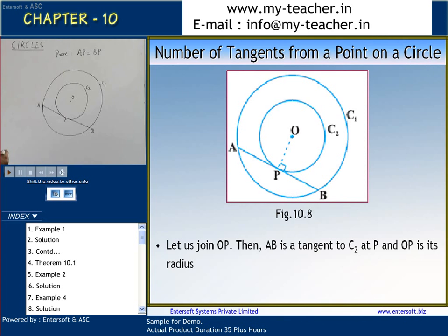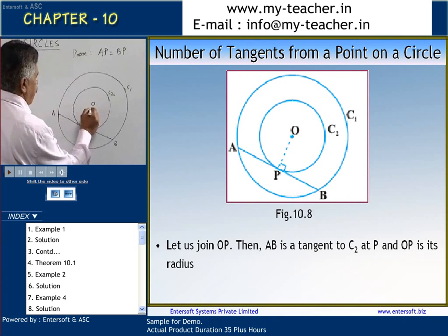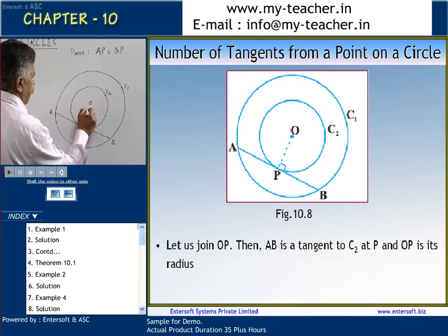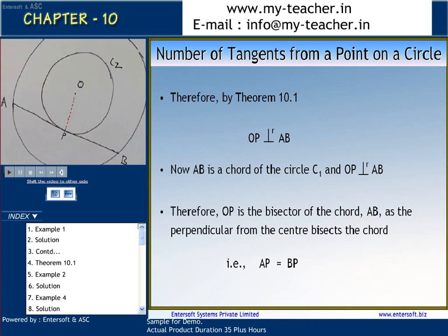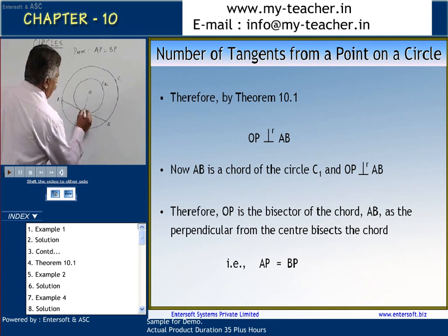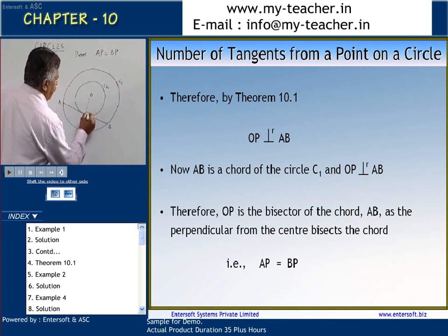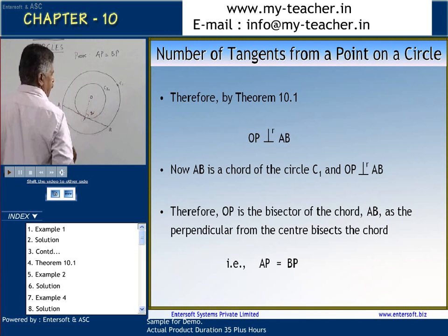To do this, let us draw a line joining the center and the point of contact of the tangent. So when I draw this line OP, OP is perpendicular to AB. Why? By Theorem 1.